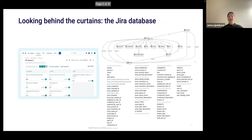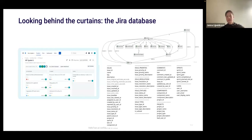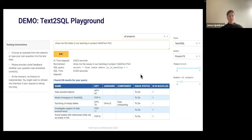Many of you have worked with Jira, but I assume only a small part has ever seen the Jira database. It is a SQL database with a quite transactional structure — tables for main entities visible in the interface, like issues, sprints, and projects, and also tables for metadata like issue priorities, statuses, issue types, and so on. Now let's jump into our demo environment and I'll show you how the system works end-to-end as of today.